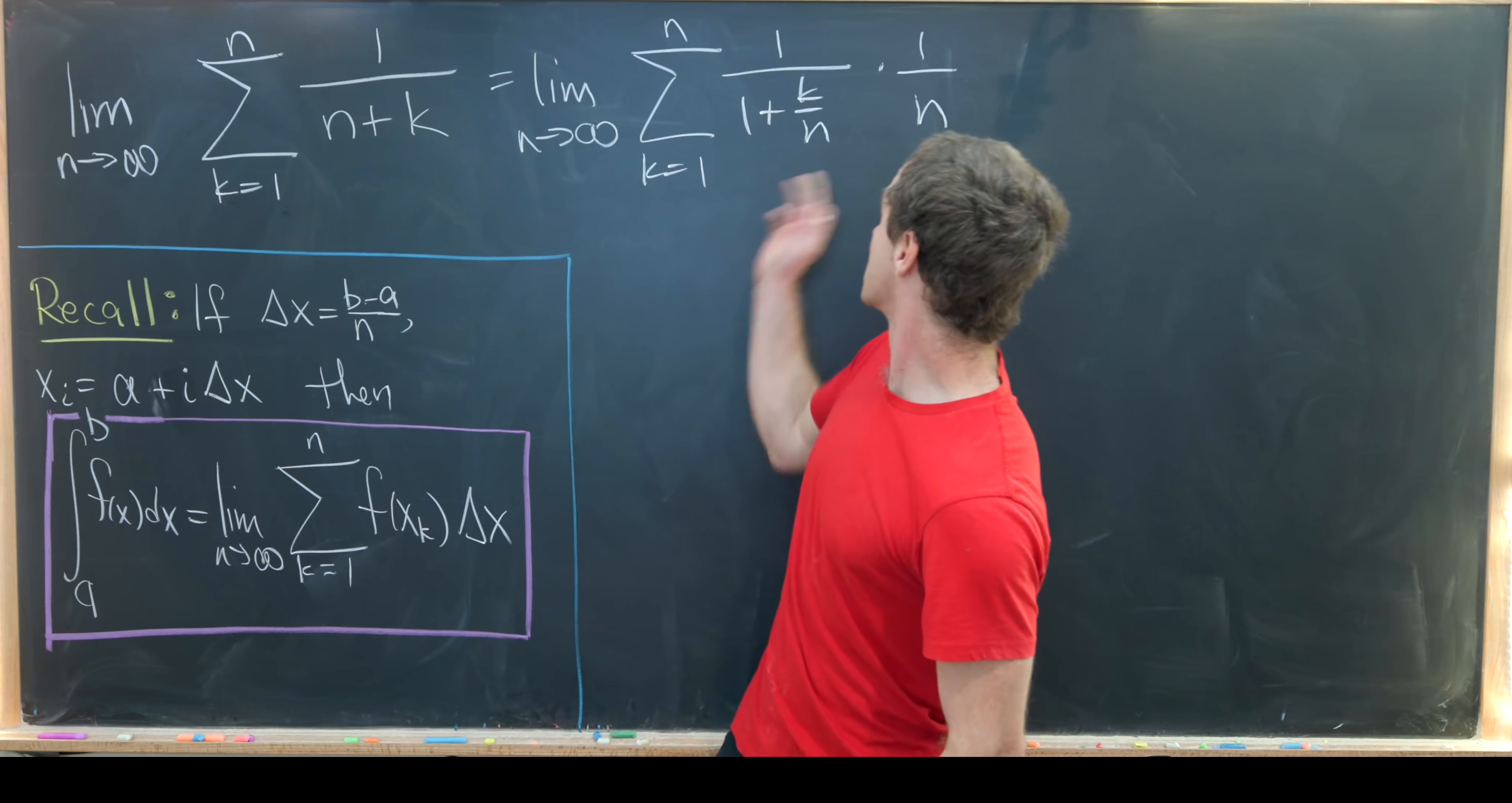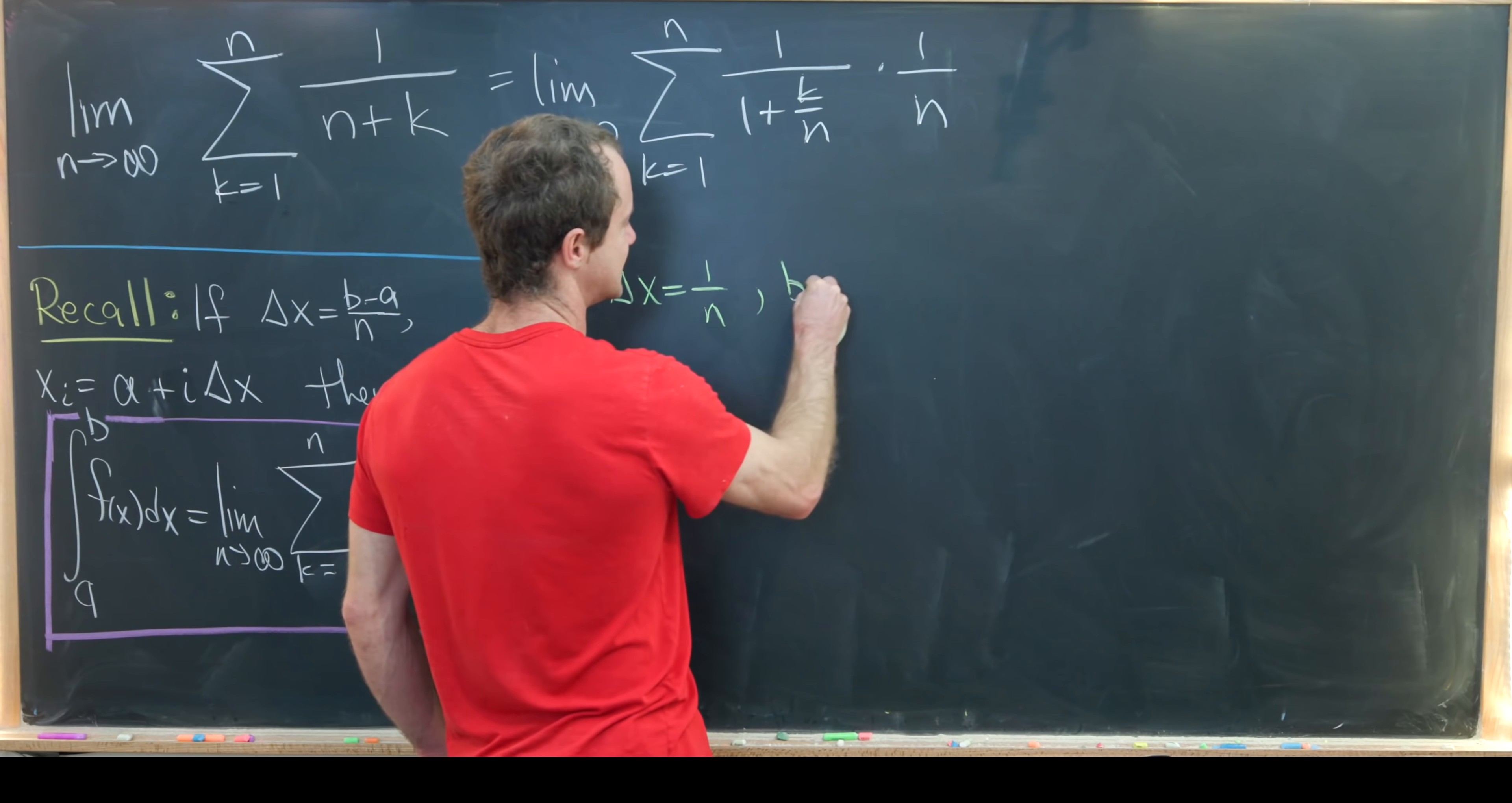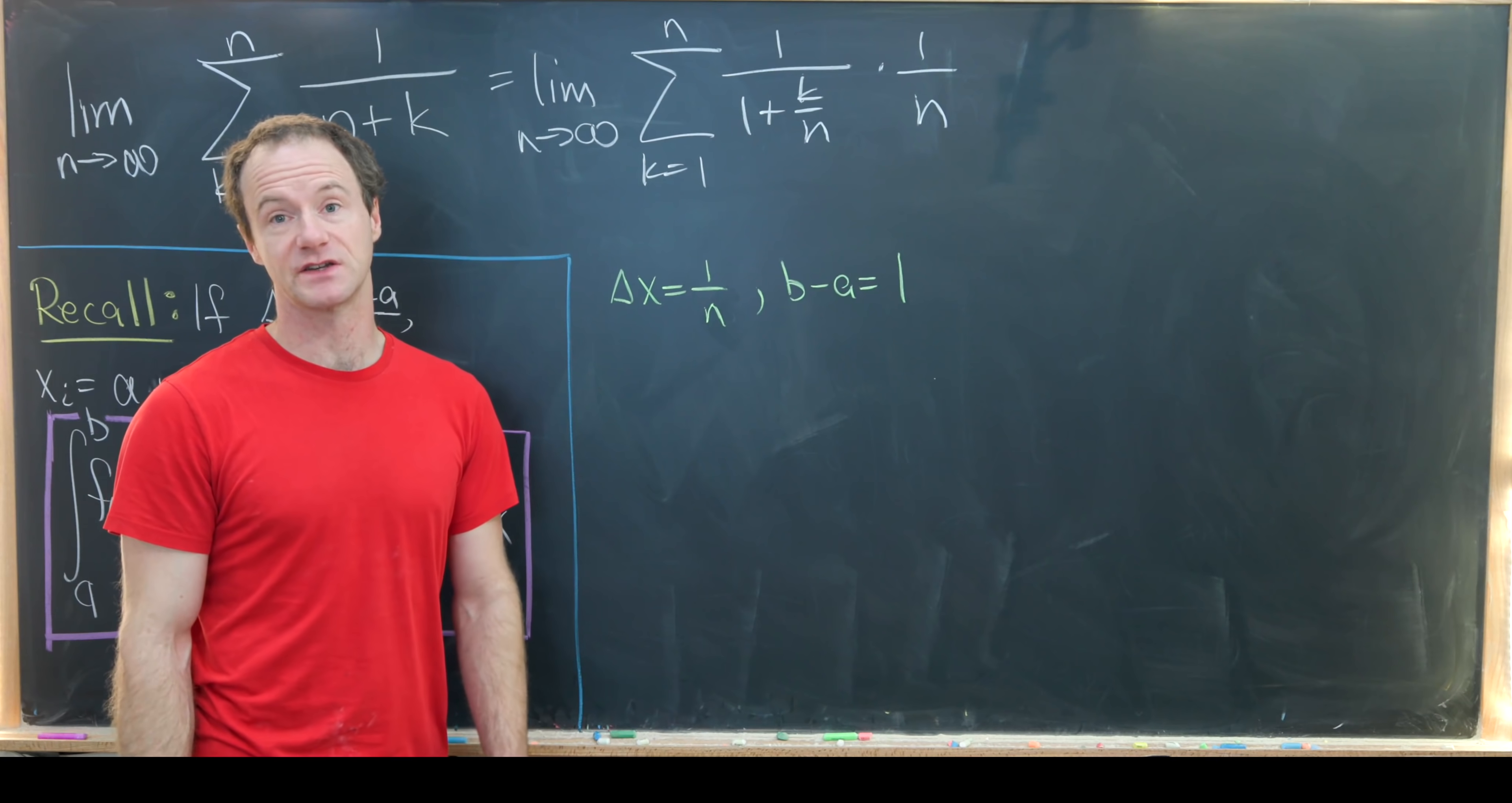So there we've got our 1 over n term which looks a lot like this b minus a over n. So that means delta x here is probably just 1 over n. We've got delta x is 1 over n, but in particular we see that b minus a is just 1. So that means the interval that we are integrating over has just length 1.